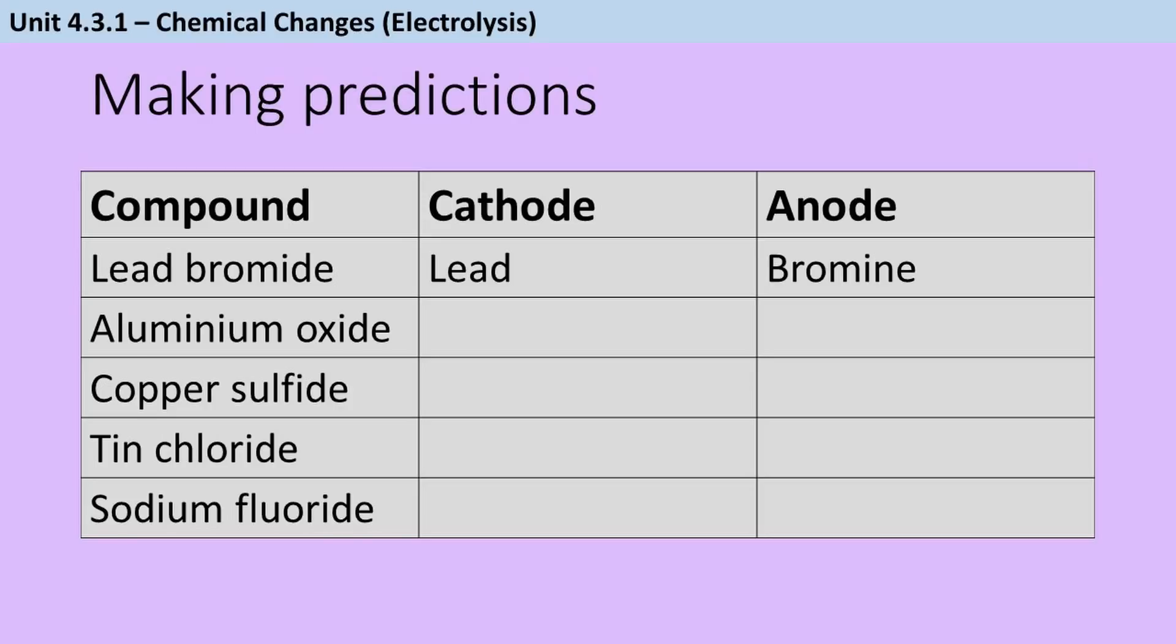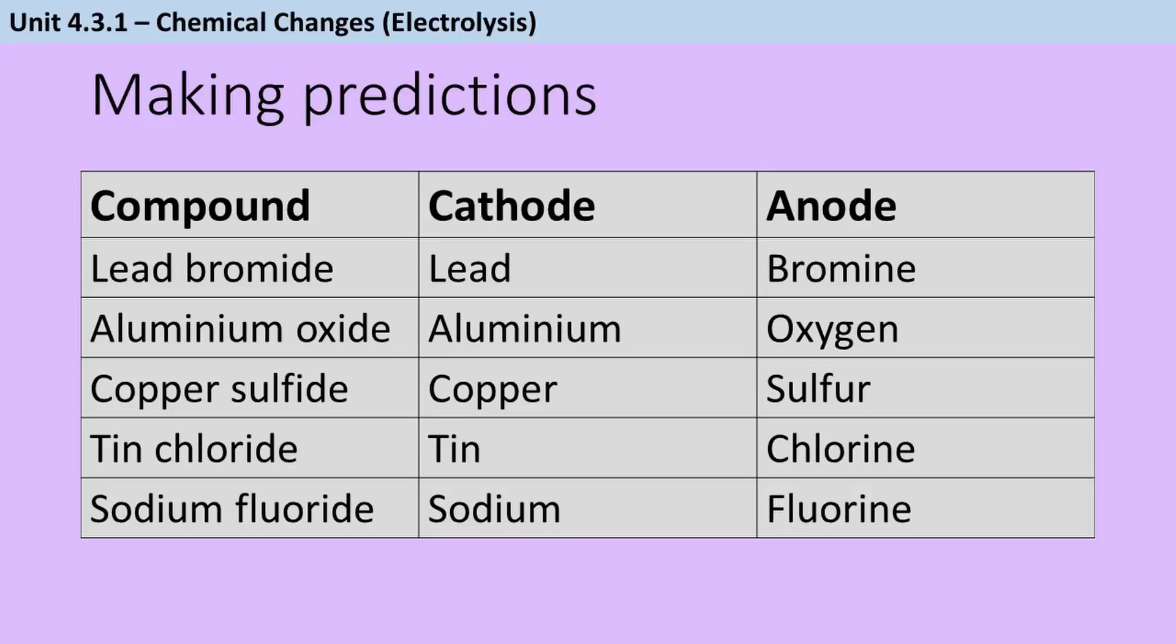Pause the video for just a second and just double check that you can work out what the products of the other four electrolytes will be. So hopefully you've got that aluminium oxide will make aluminium and oxygen, copper sulphide will make copper and sulphur, tin chloride will make tin and chlorine, and sodium fluoride will make sodium and fluorine.